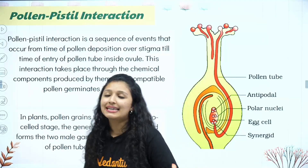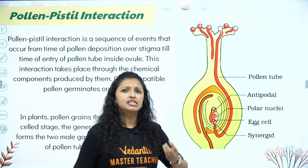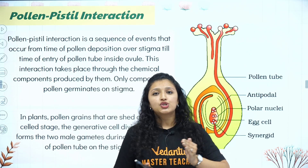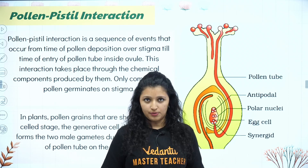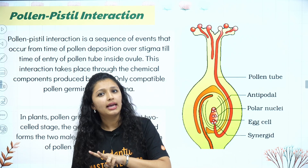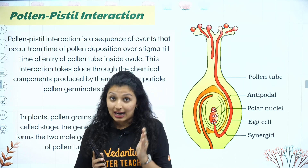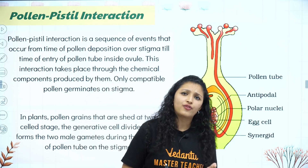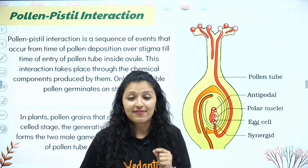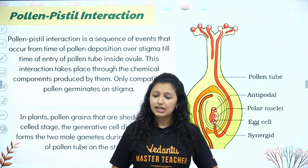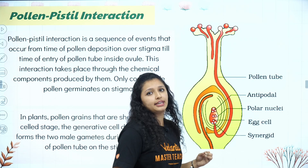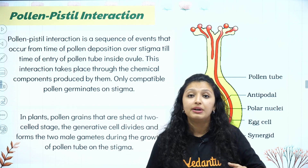Pollen-Pistil Interaction. As we have studied Microsporogenesis and Megasporogenesis, we are going to form the gametophytes. This is the 2-cell stage and this is the 3-cell stage. For the female gametophyte, this is the embryo sac — the 8-nucleate, 7-cell stage. Everything is ready. Now we are going to study pollination, types of pollination, and outbreeding devices.